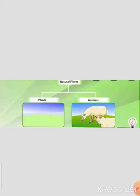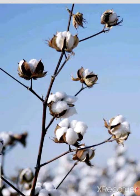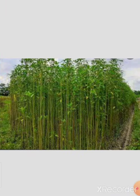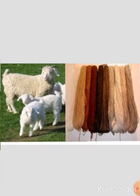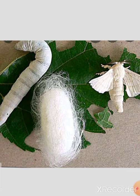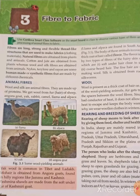Examples of plant fibers include cotton and jute plants. Examples of animal fibers include wool from sheep, goat, rabbit, yak, etc., and silk from silkworm, which is also an animal fiber.